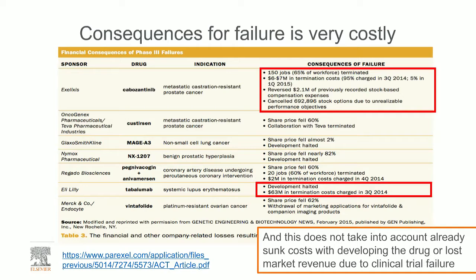Here we look at a couple of examples of consequences of late-stage failure. For instance, in the case of the failure of Cabozantinib, 150 jobs were lost and there were significant termination costs and stock-based issues. In the case of Tabalumab, the total development had to be halted with 63 million in termination costs in 2014. These significant costs don't even take into account the sunk costs of drug development, lost market revenue, or the loss of benefit for patients who could benefit from these new treatments.